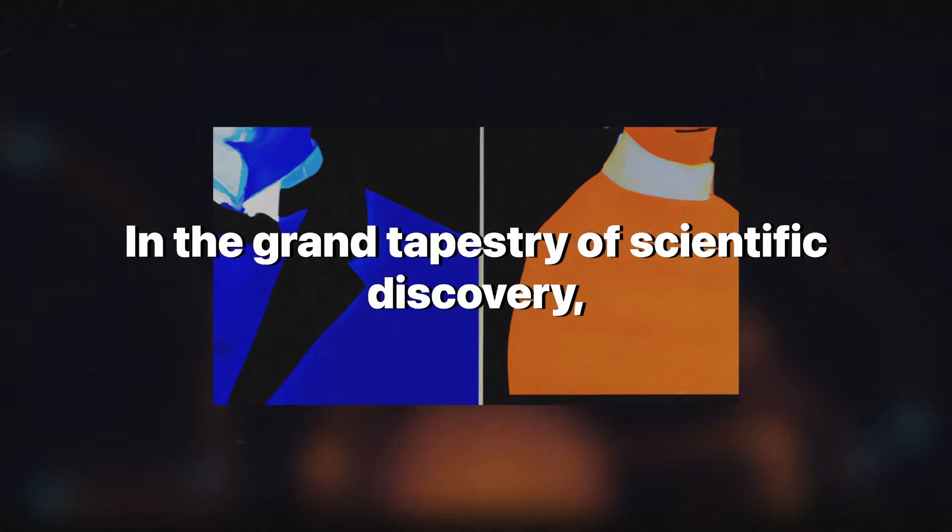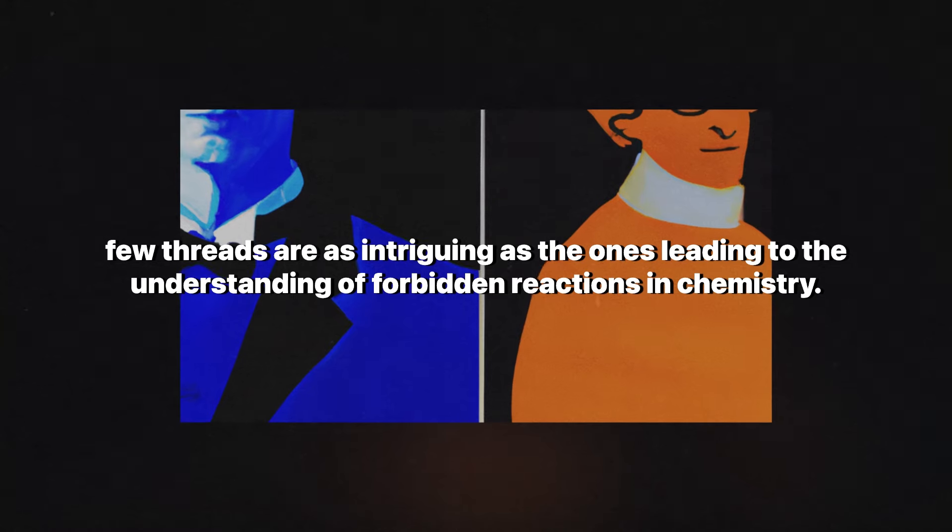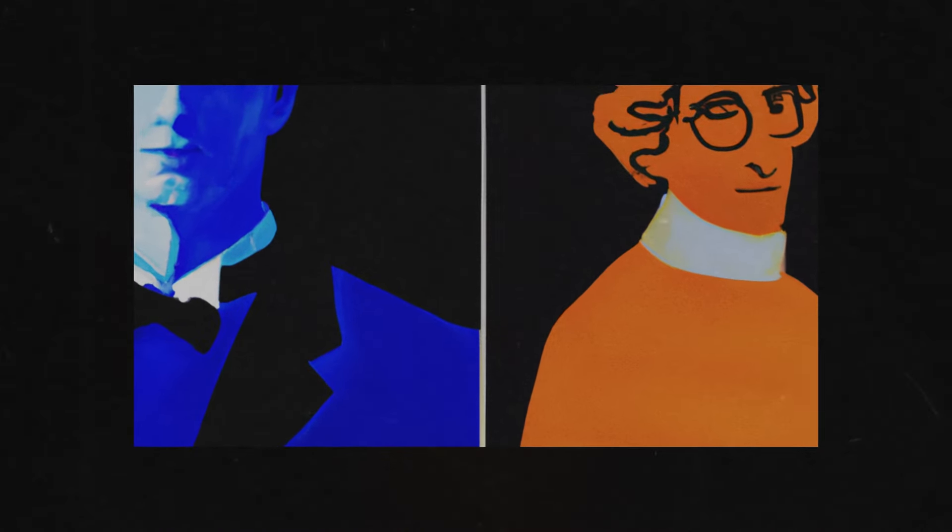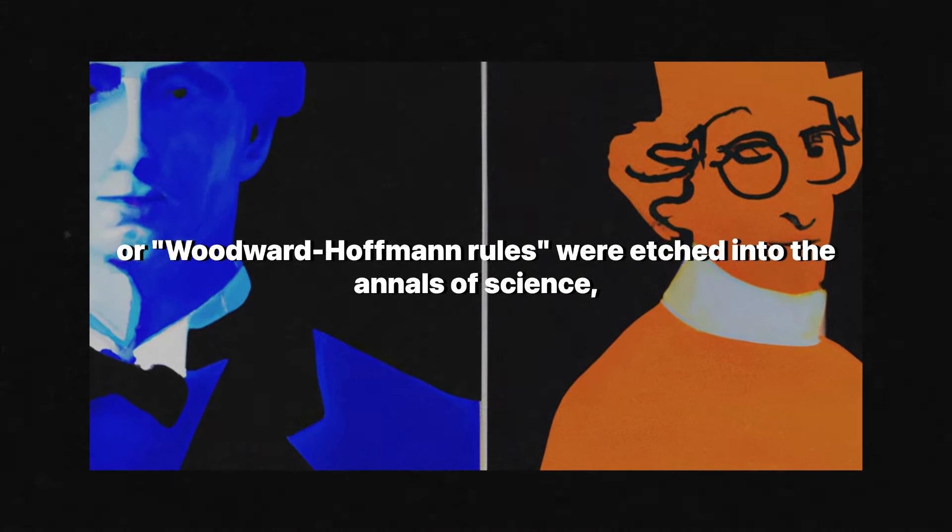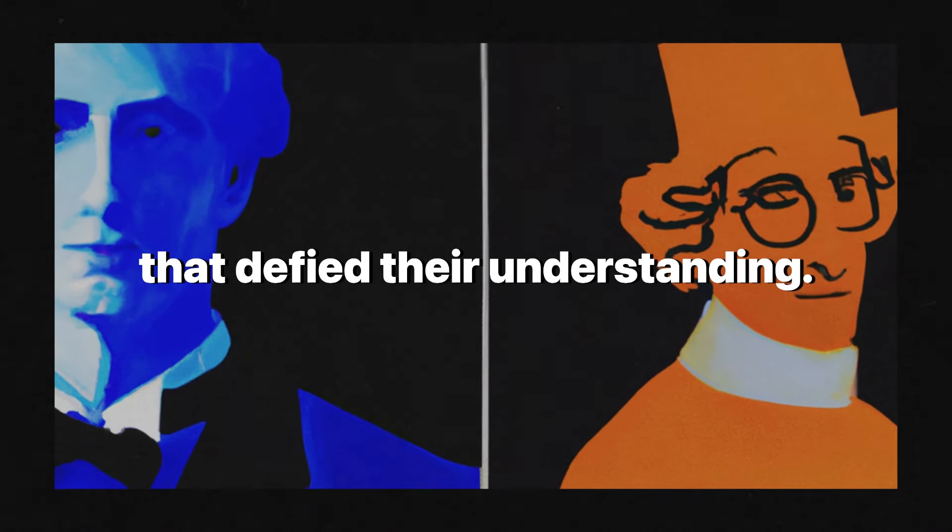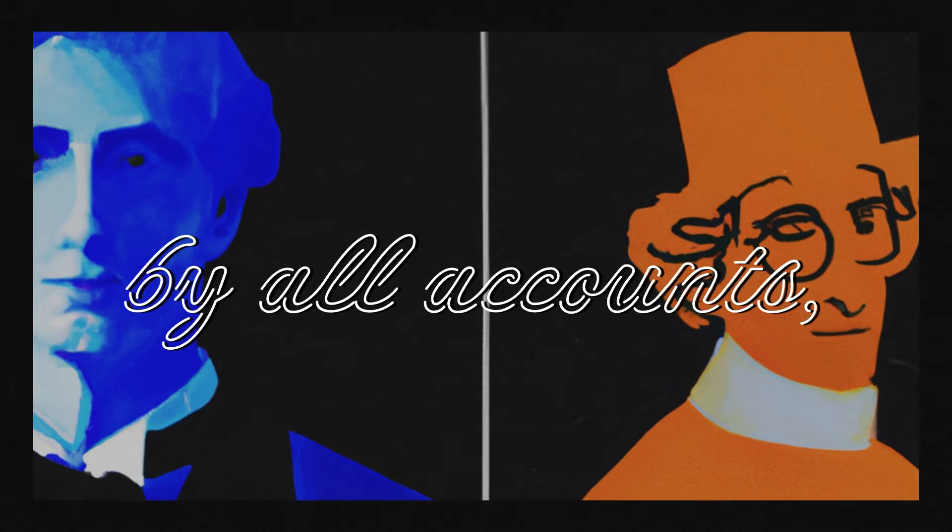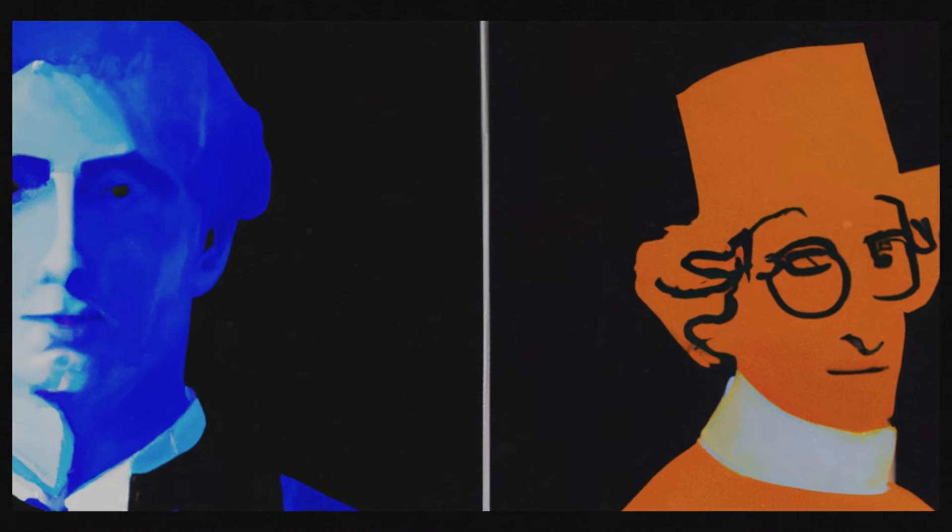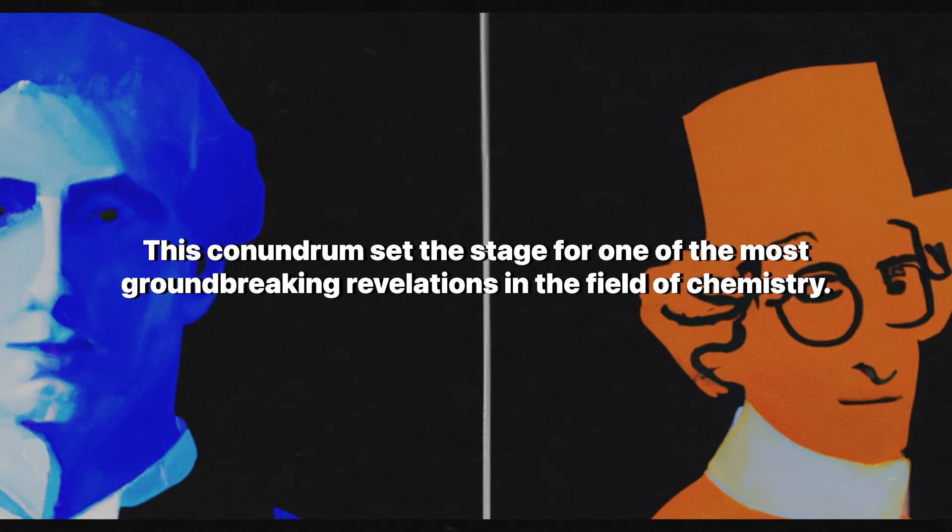In the grand tapestry of scientific discovery, few threads are as intriguing as the ones leading to the understanding of forbidden reactions in chemistry. Long before the terms orbital symmetry or Woodward-Hoffman rules were etched into the annals of science, chemists stumbled upon reactions that defied their understanding. These were processes that, by all accounts, should have occurred with ease but were mysteriously absent. This conundrum set the stage for one of the most groundbreaking revelations in the field of chemistry.